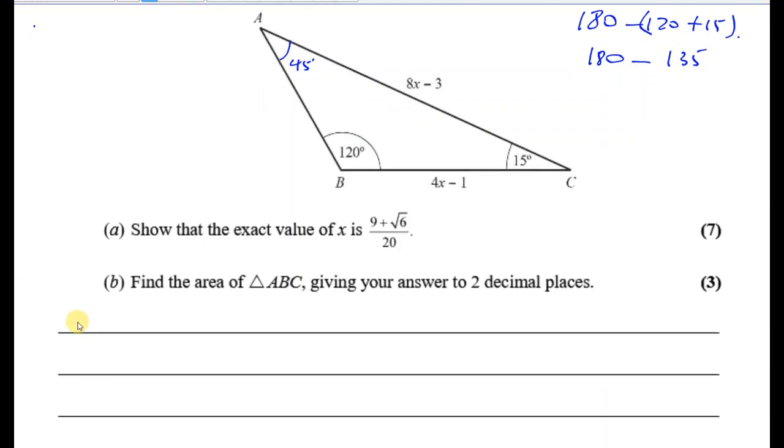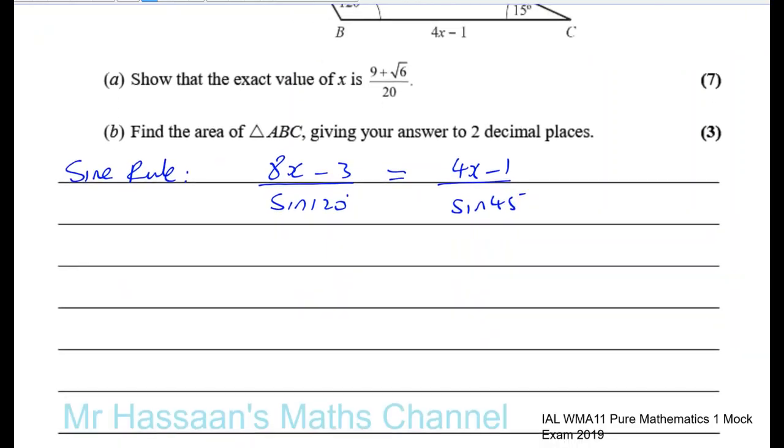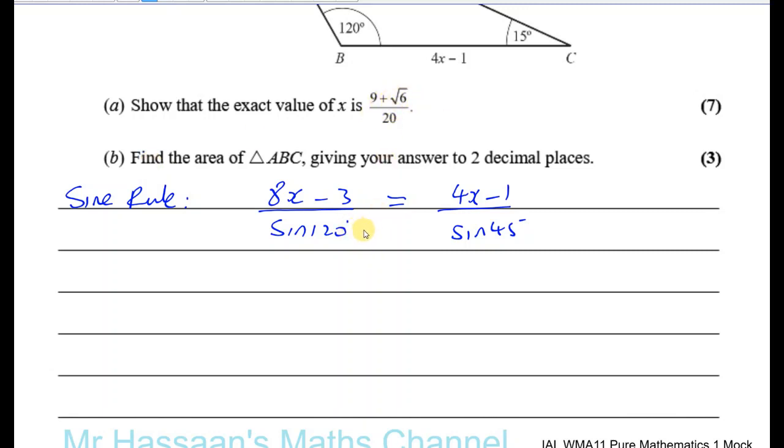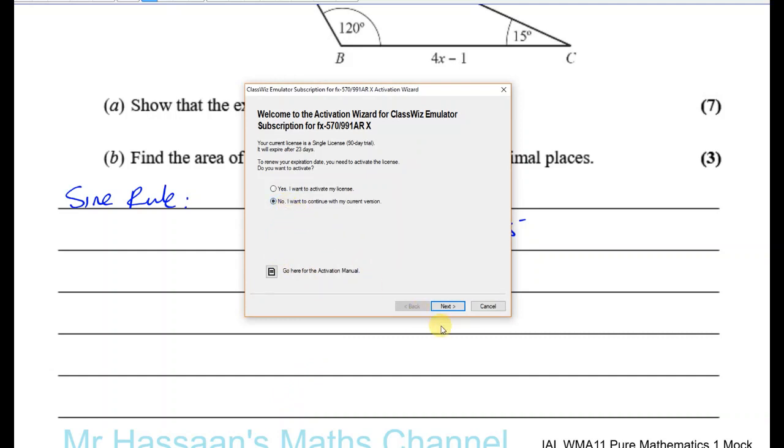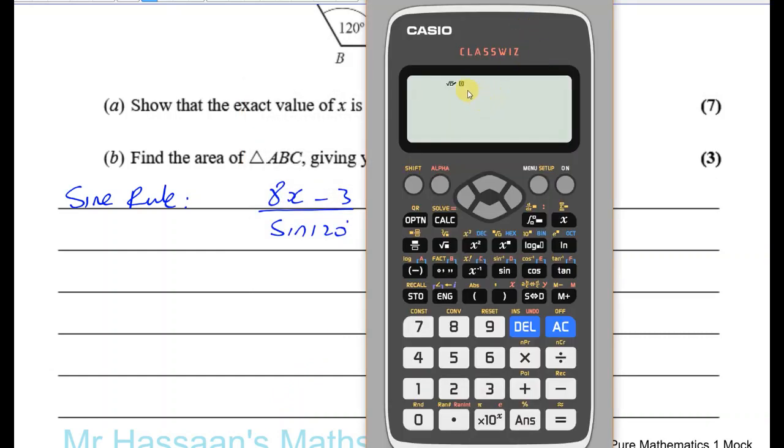So now using the sine rule, by the sine rule we can say that the sine of the angle divided by the side opposite it is going to be the same. So we can say that 8X minus 3 over the sine of 120 will give me exactly the same ratio as 4X minus 1 over the sine of 45. So we've got to basically make X equal this from here. Now the sine of 120 is the same as the sine of 60, which is going to give you root 3 over 2.